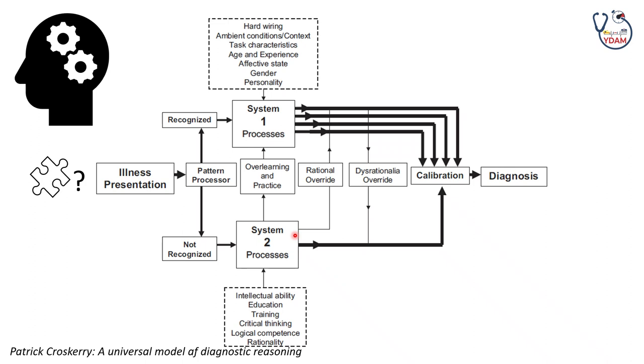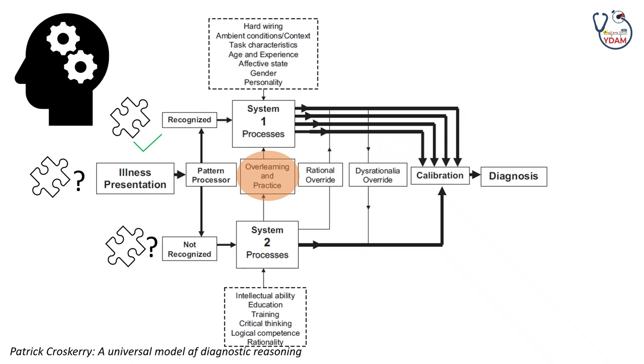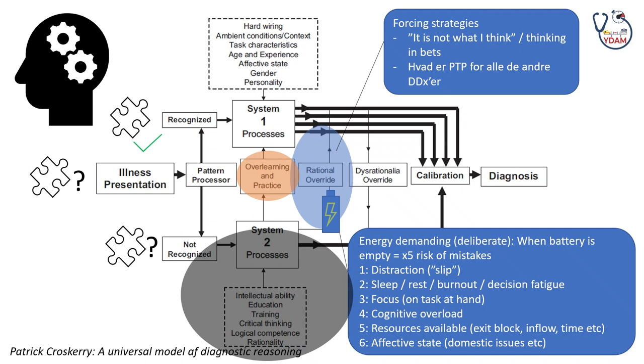I've made an entire video on System 1 and System 2 — I won't go into all the details here. Let's now go through probabilistics, because this is where they belong in the laborious System 2 thinking. Professor Stevan Carden from Manchester says: 'We are not diagnosticians, we are probabilisticians.' In emergency medicine, we don't care about the specific diagnosis — we only care about ruling out dangerous conditions.